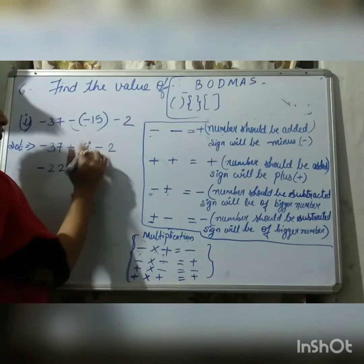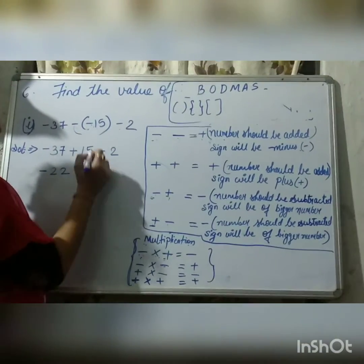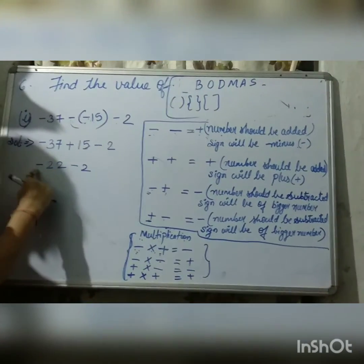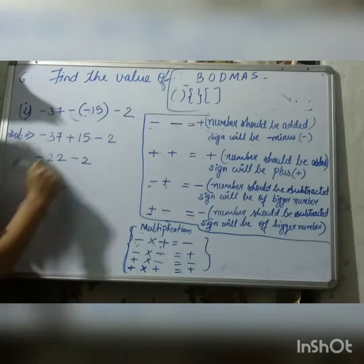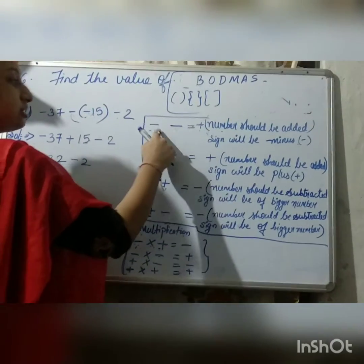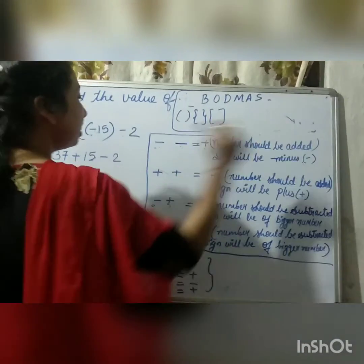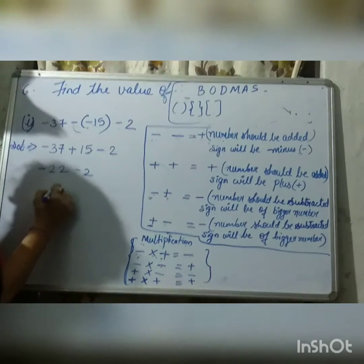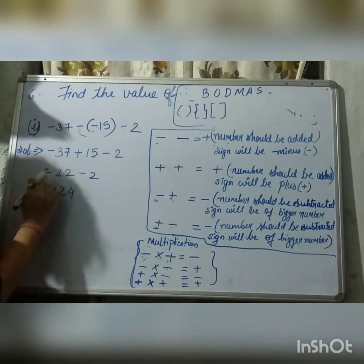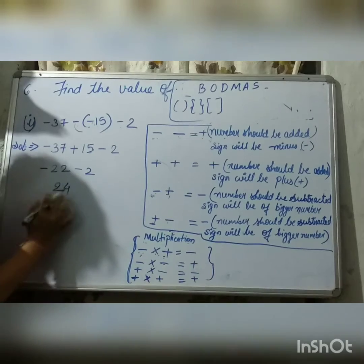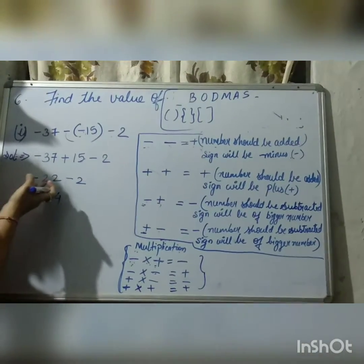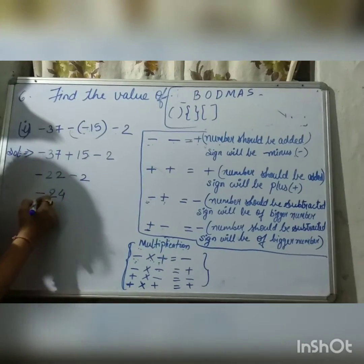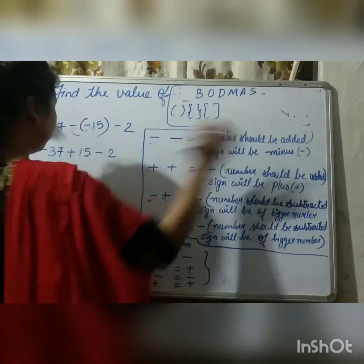Now, we'll write minus 22 minus 2. Here, both are negative. Which rule will we follow? If both the signs are negative, then we do plus — the numbers should be added. So, 22 plus 2 equals 24. And 24 will get the sign of minus, because both integers are negative. So, the answer will also carry the negative sign: minus 24.